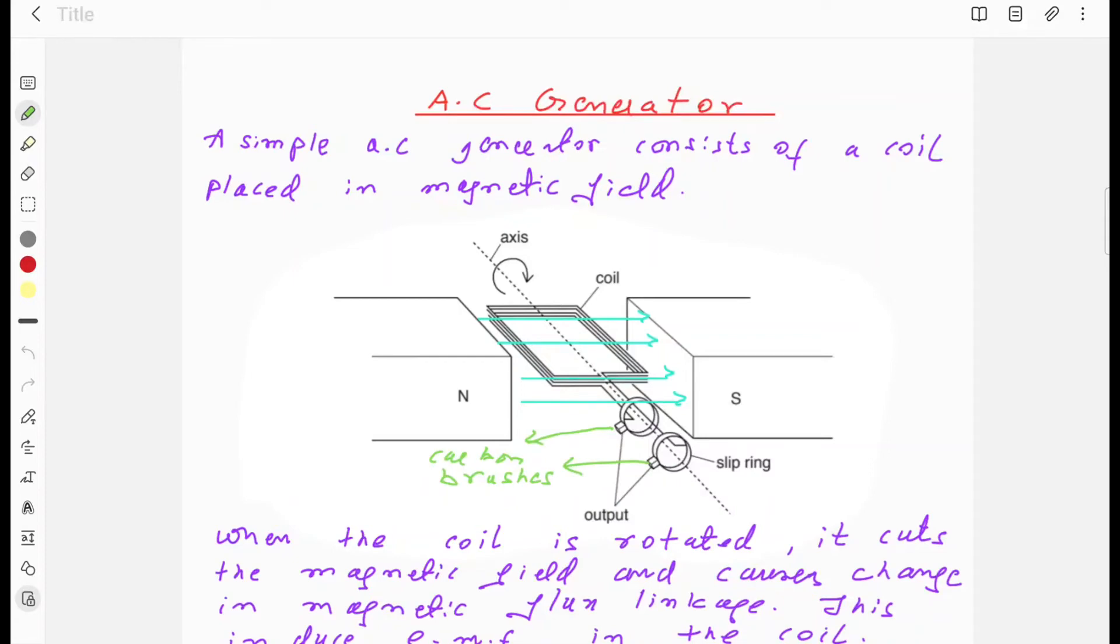AC generator. A simple AC generator consists of a coil placed in a magnetic field.